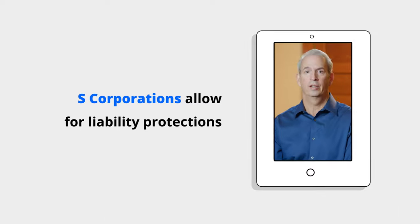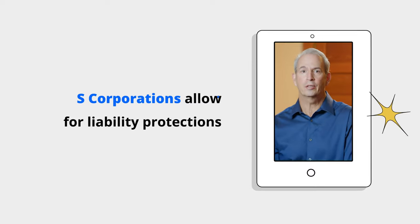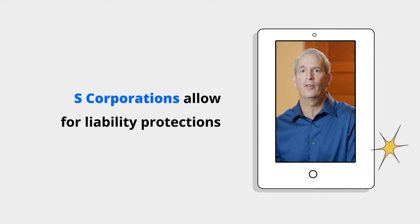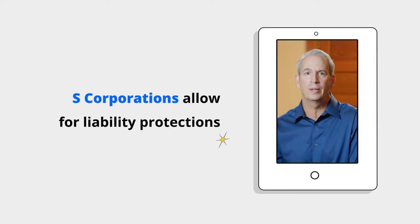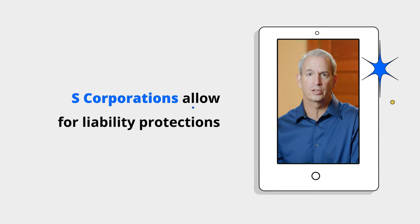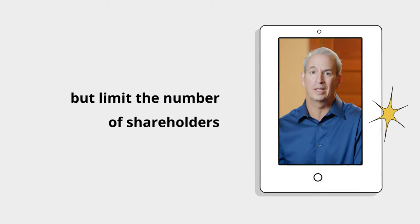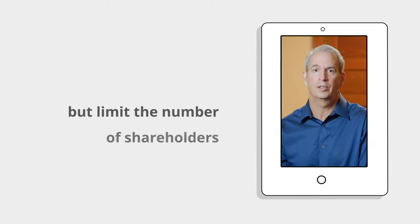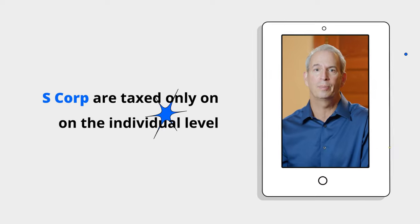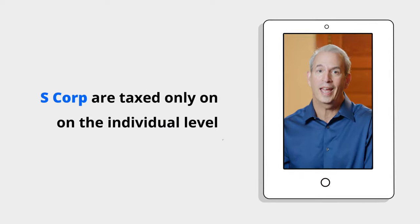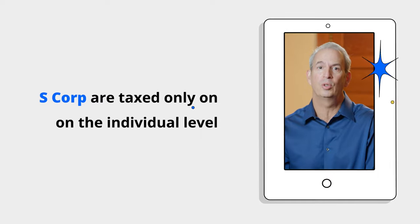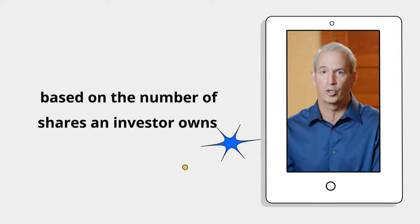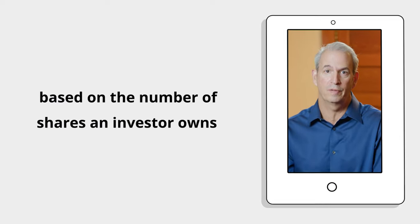On the other hand, subchapter S-Corporations, also known as S-Corp, allow for the same well-established liability protections, but you must consider that you are limited to a certain number of shareholders. This type allows the company to retain profits, but is taxed on the individual level only, based on the exact percentage of ownership of shares of the corporation.